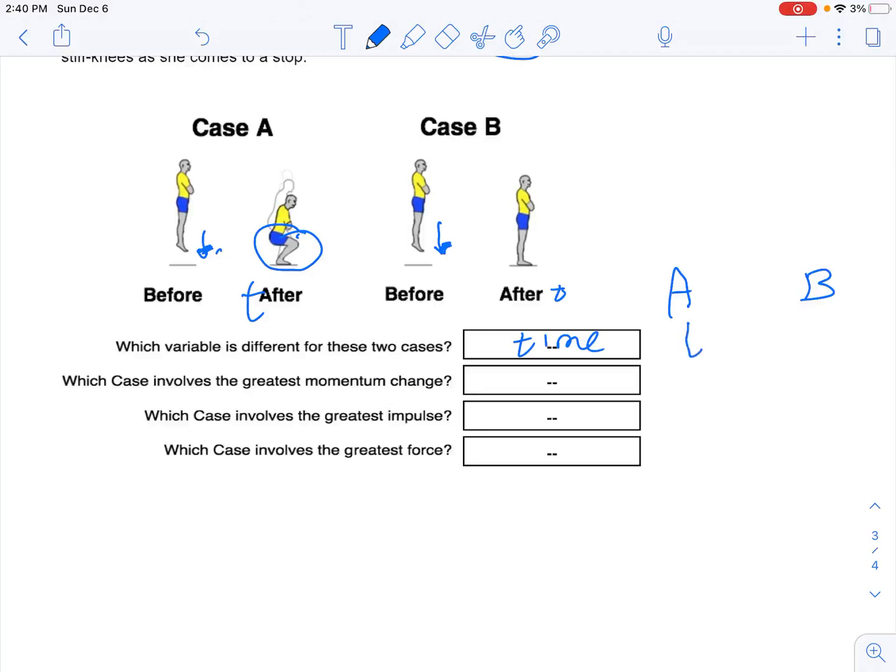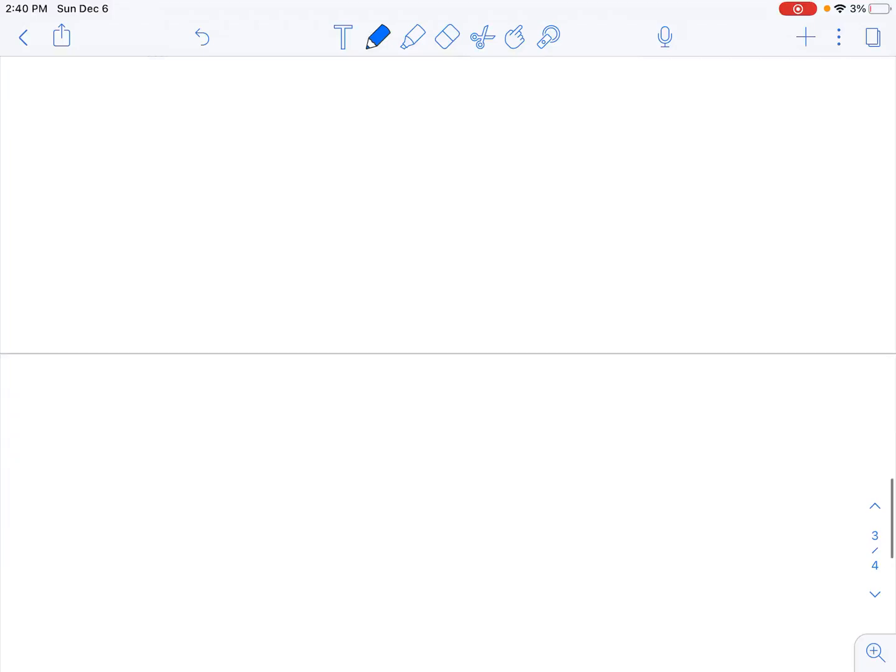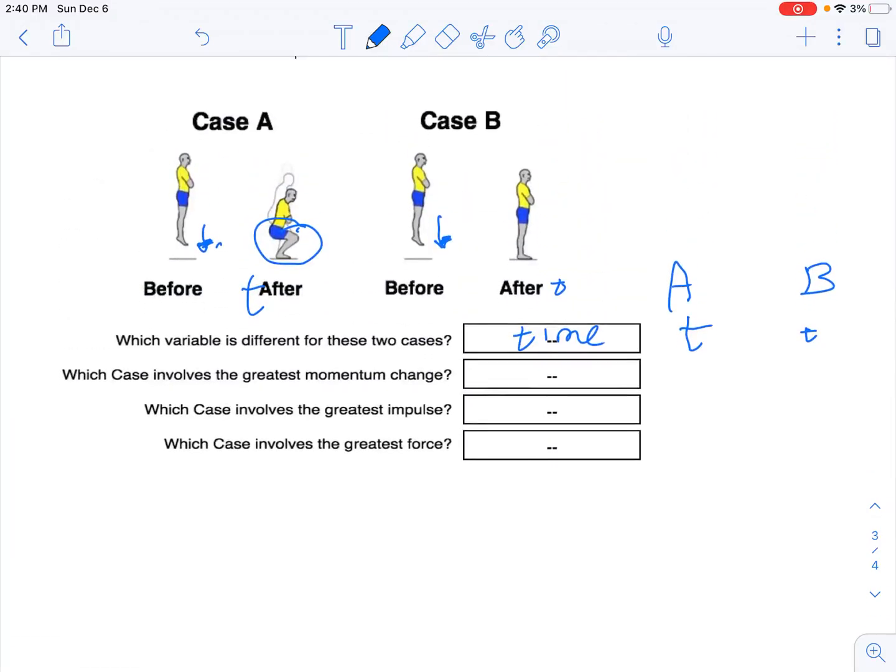Which case involves the greatest change in momentum? Well, they're both the same. It's the same person, M and M, and the same change in velocity. They're landing at 12 meters per second and they're coming to rest. So the same change in speed. Now impulse is the same also.